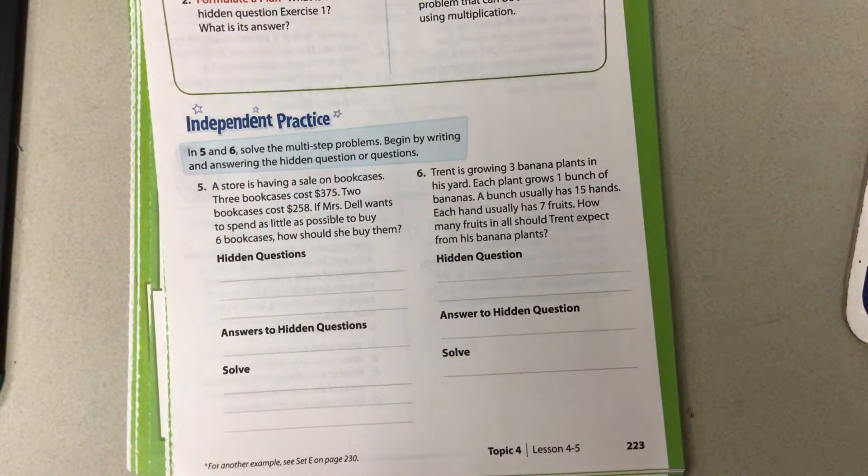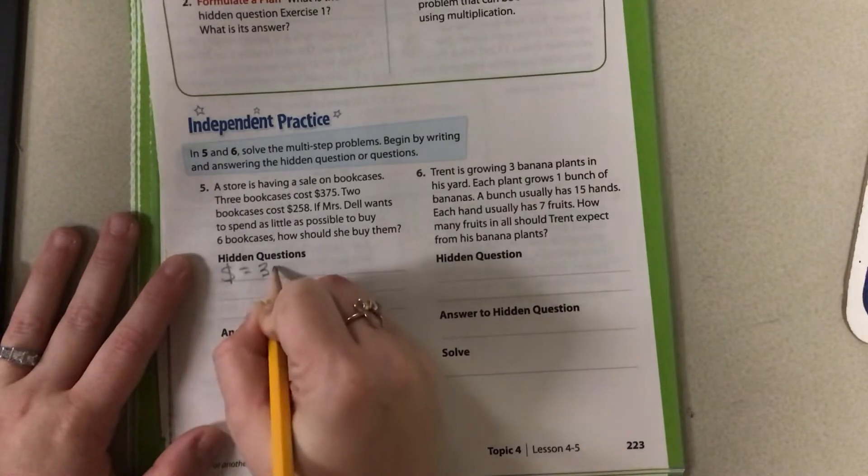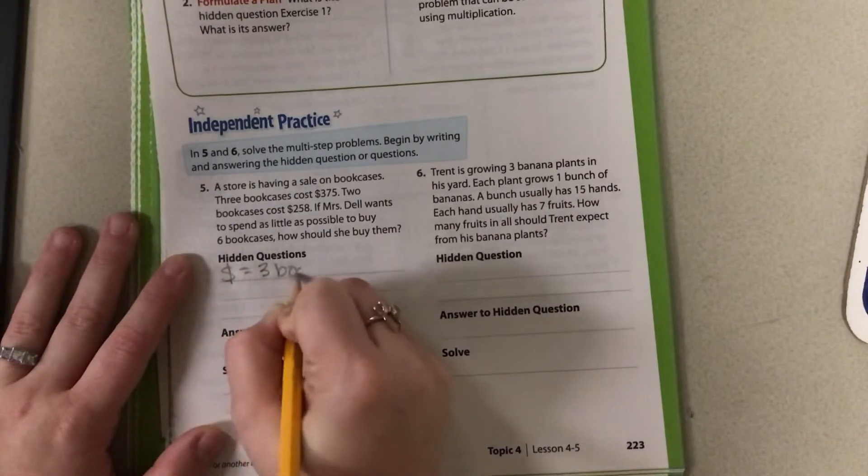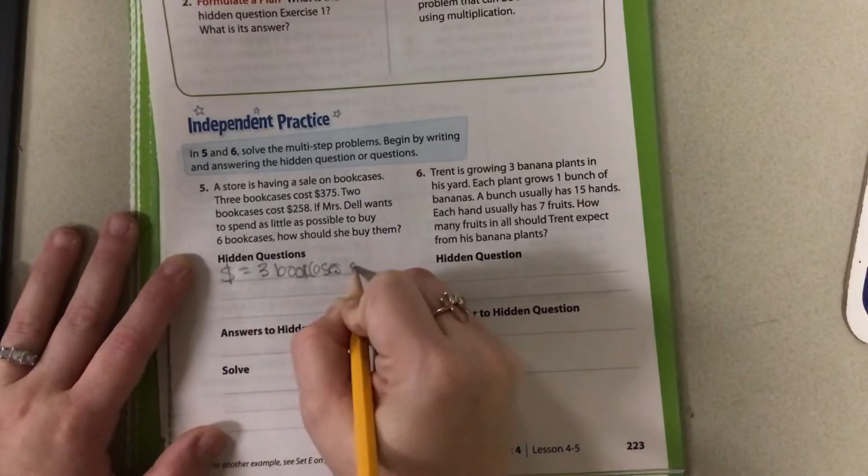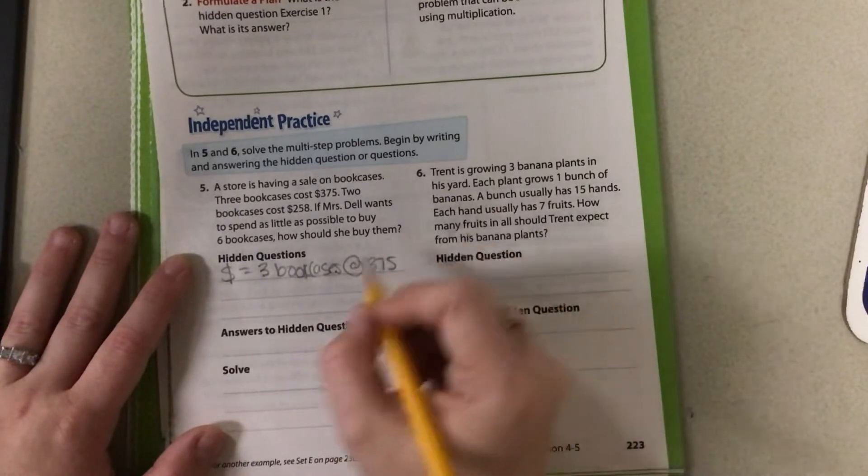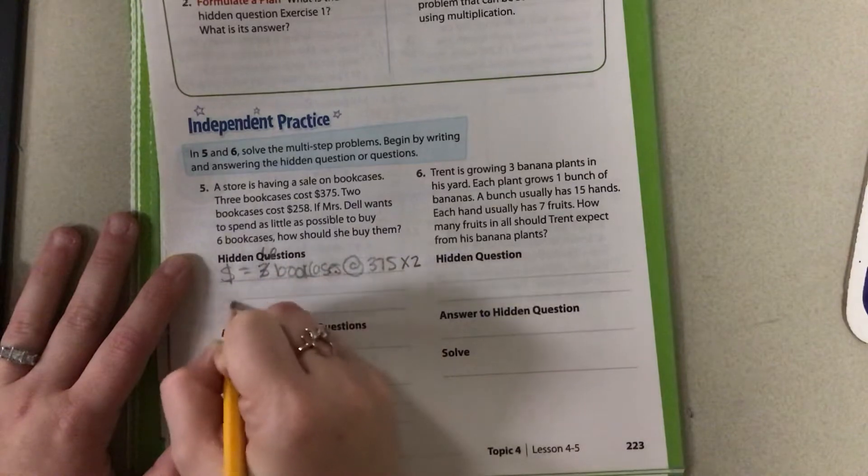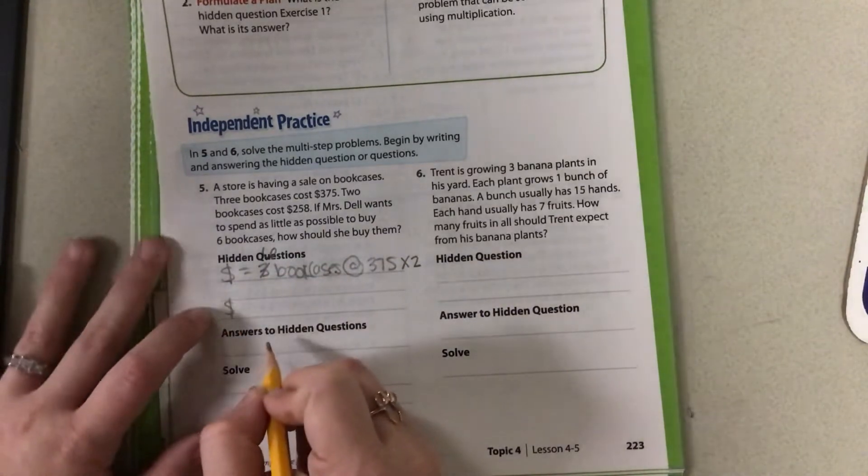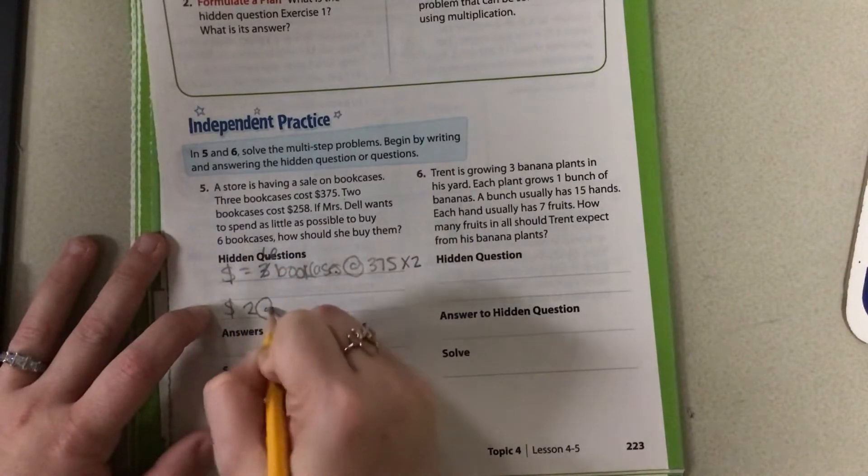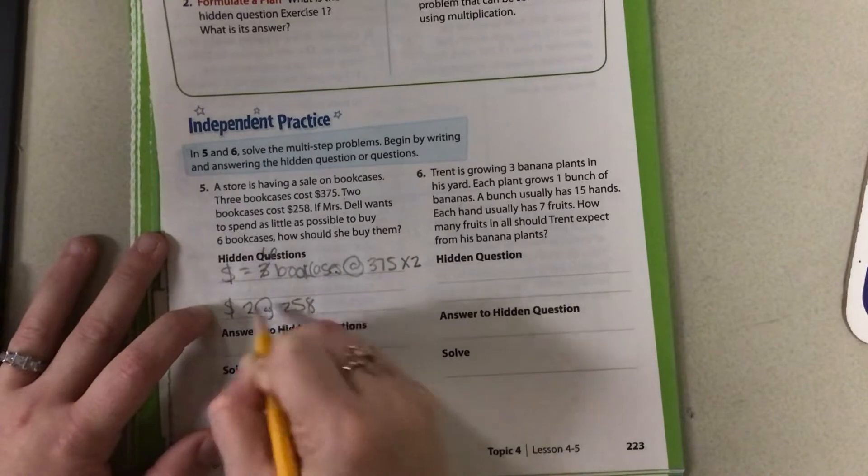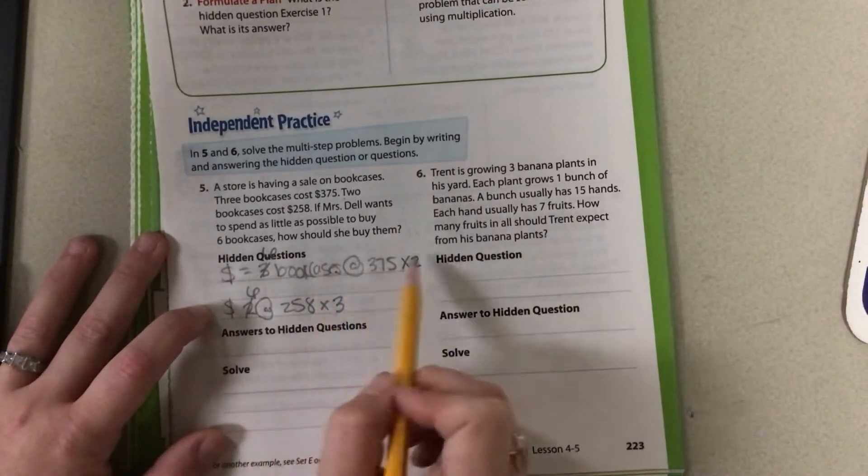So our hidden questions are the total money for 3 bookcases at $375, which we would have to times it by 2 to get to 6. And then we need to know the total for the 2. So if I did 2 bookcases at $258, in order to get this to 6, I have to multiply that by 3. So those are going to be our 2 questions.